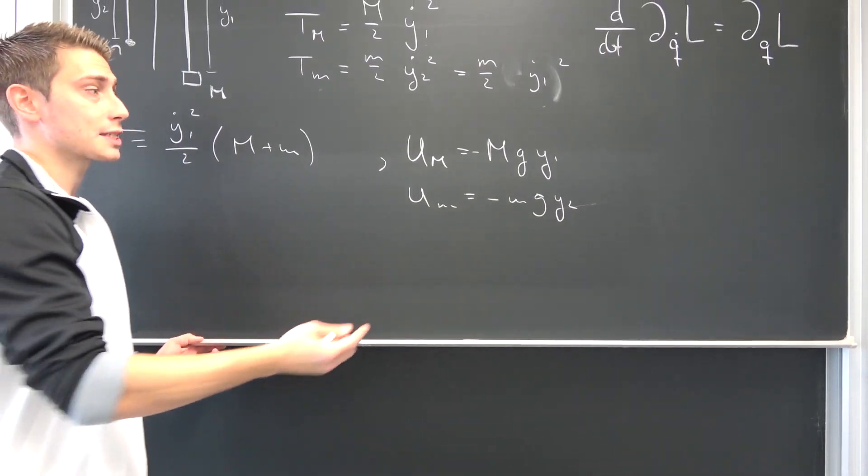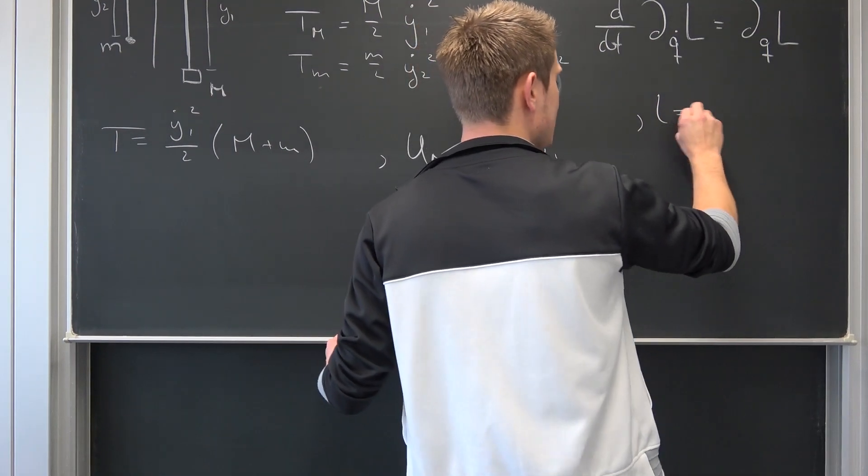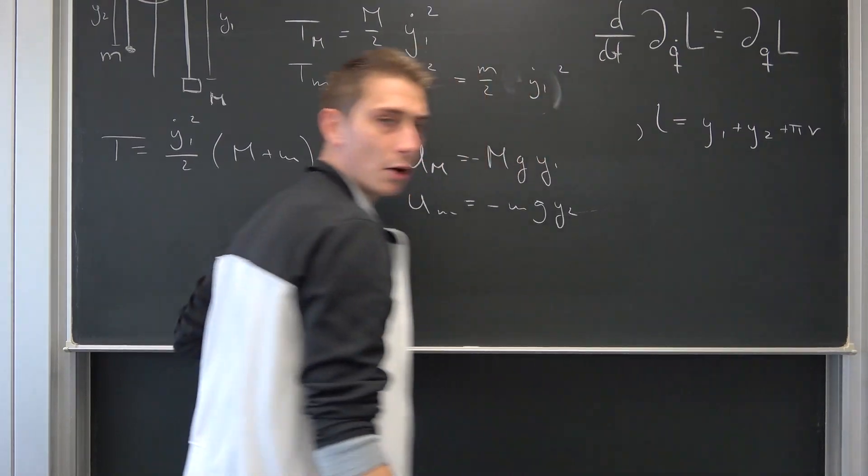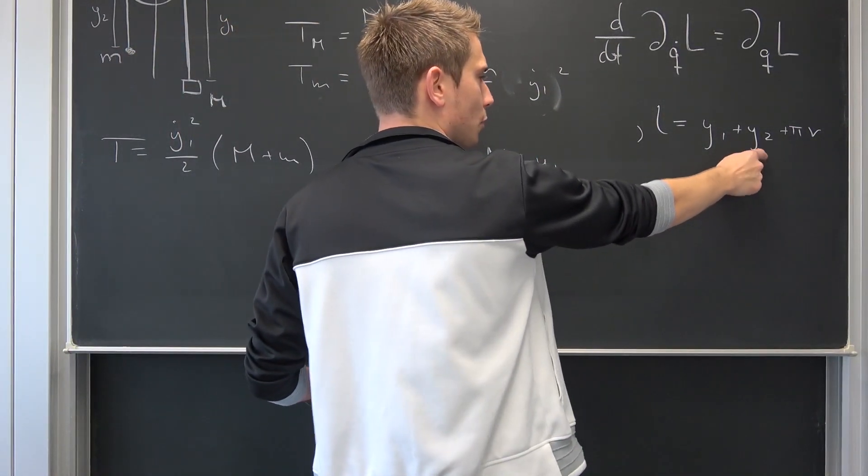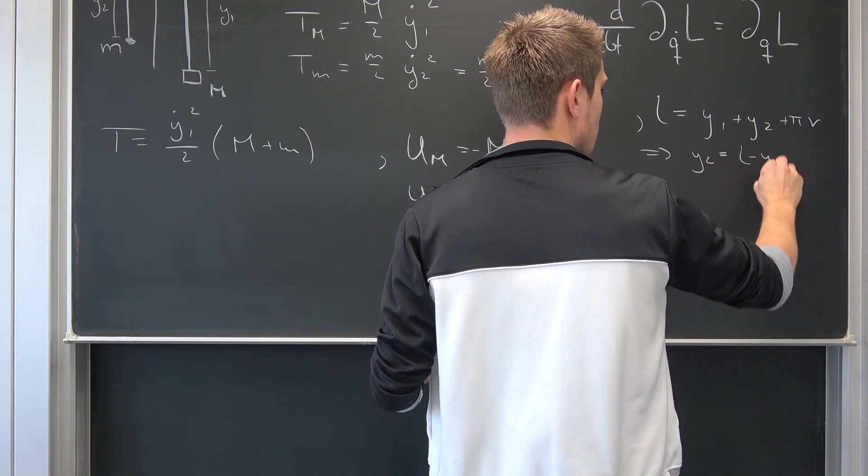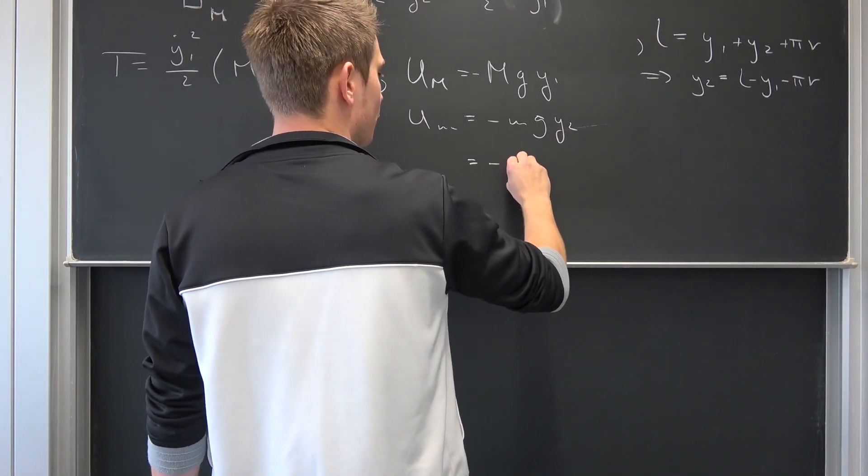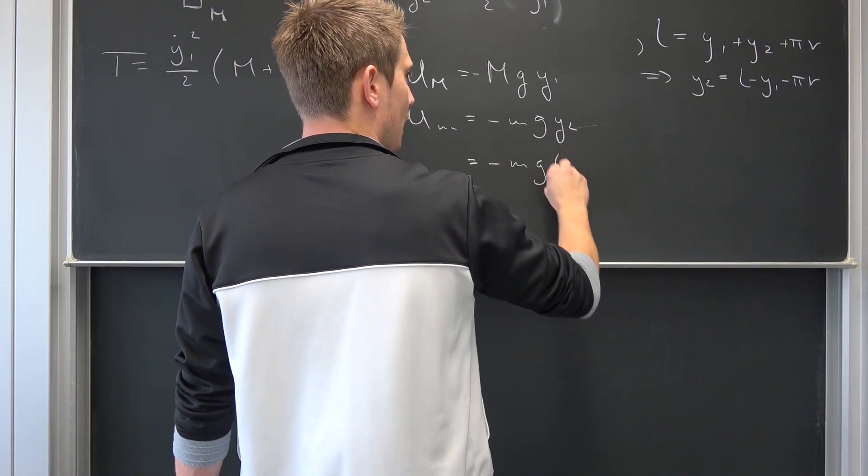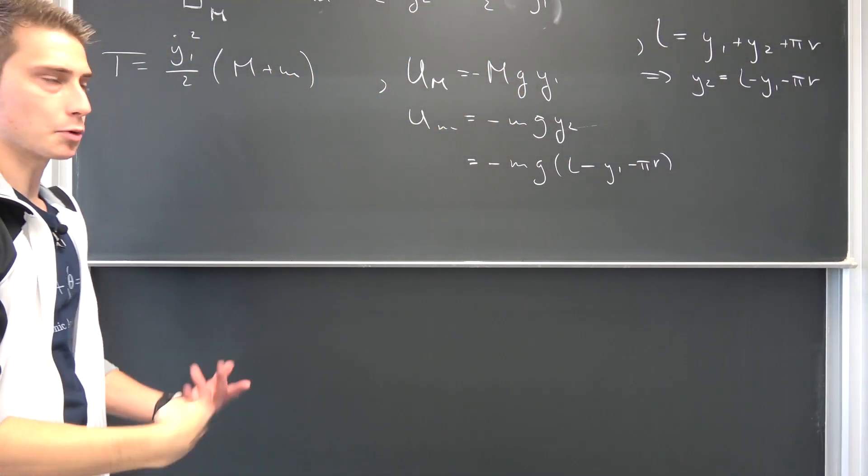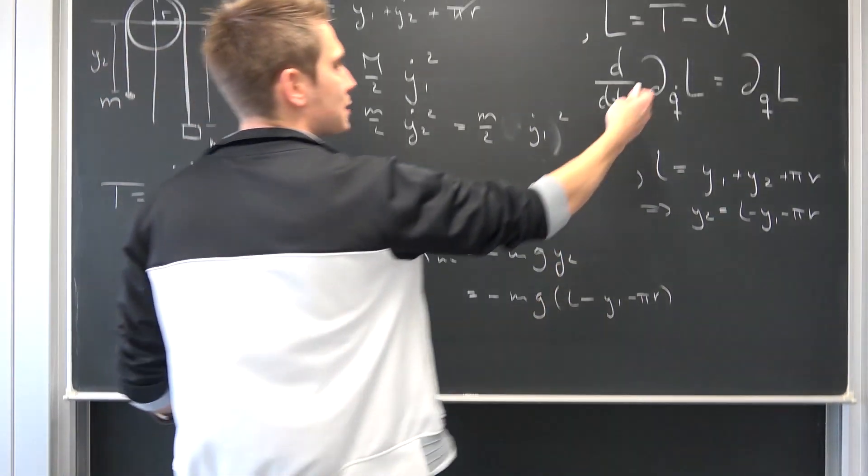Kind of the same spiel for our Um. It's going to be negative m times g times Y2. But now we would like to express this only with respect to Y1 and Y2. If we take a look at our L once again, it was Y1 plus Y2 plus π times R. Meaning overall, if we were to solve for Y2, this means that we have Y2 is thus equal to L minus Y1 minus πR. We can plug this into here, leaving us with negative m times g times L minus Y1 minus πR. And thus our total potential energy are those two added together. And now we can actually construct ourselves the Lagrangian.